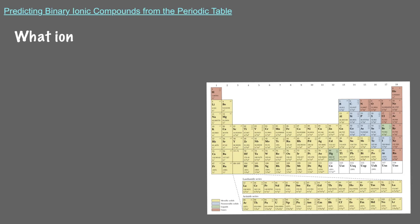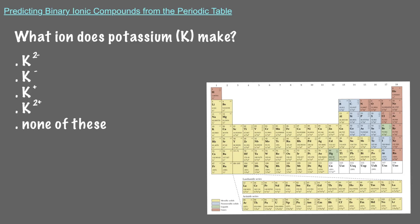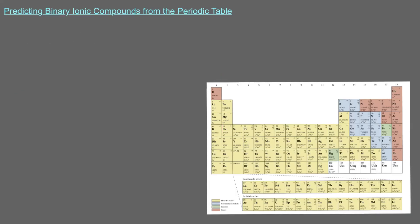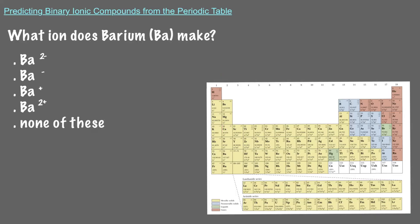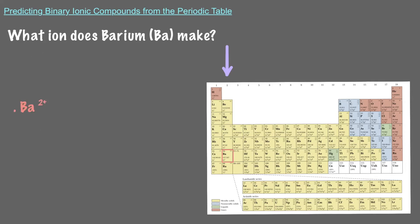What ion does potassium make? Since potassium is an alkali metal in group 1 of the periodic table, it always makes a cation with a positive 1 charge. What ion does barium make? Barium is an alkaline earth metal, so it belongs to group 2 of the periodic table, which means it will always make a cation with a positive 2 charge.